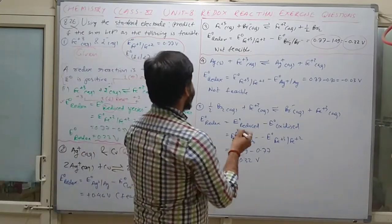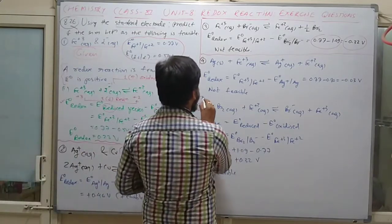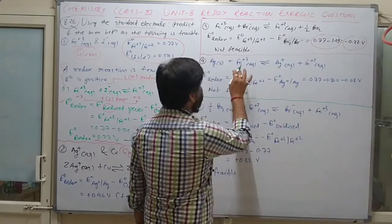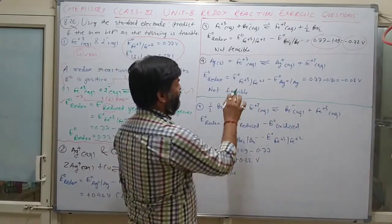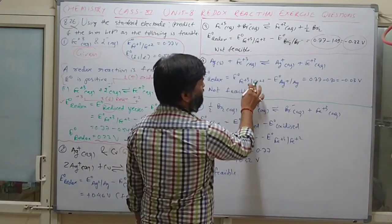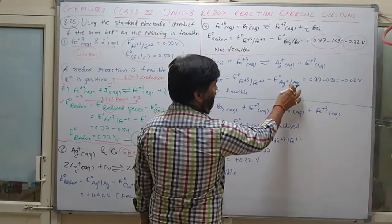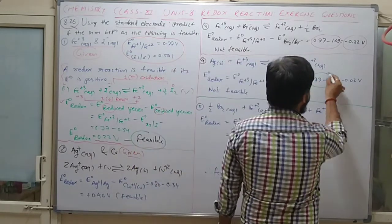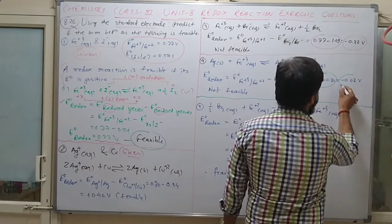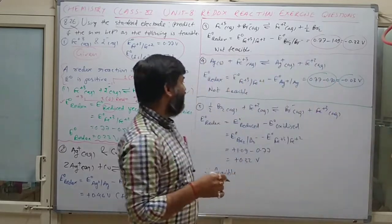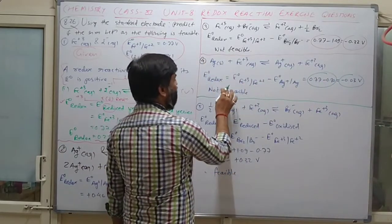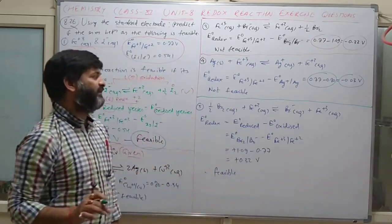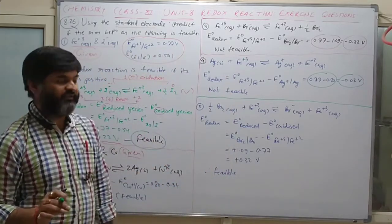Question 4: reaction between silver and Fe³⁺. Fe³⁺ reduces to Fe²⁺ and Ag⁺ reduces to Ag. Using the given data values, the E° redox comes out negative. Therefore, the reaction between silver and Fe³⁺ is not feasible.